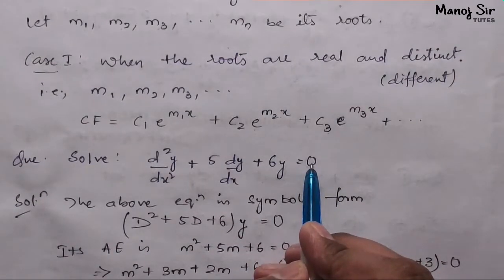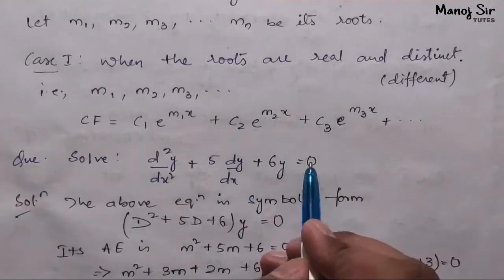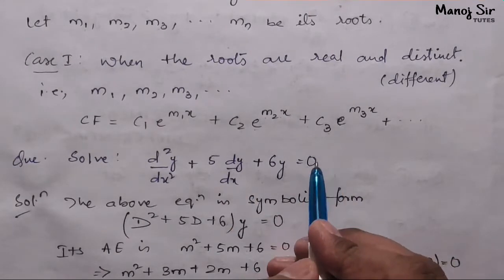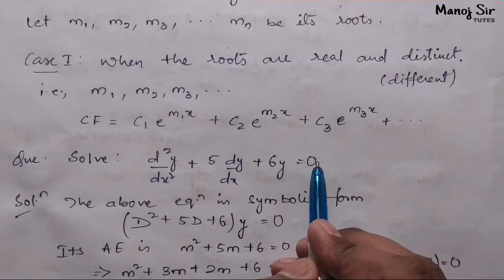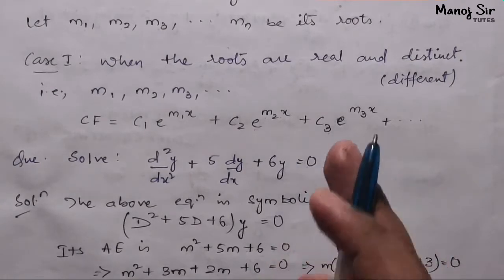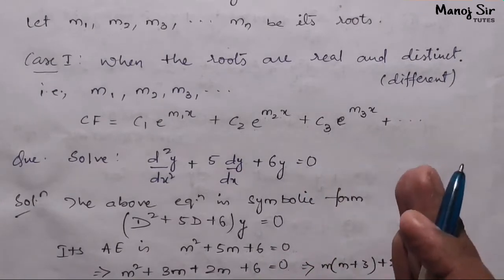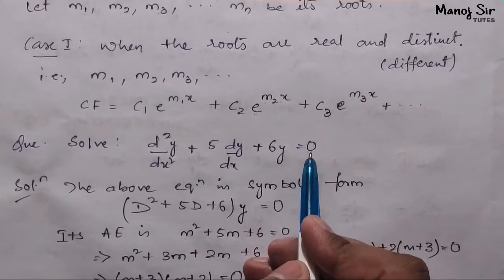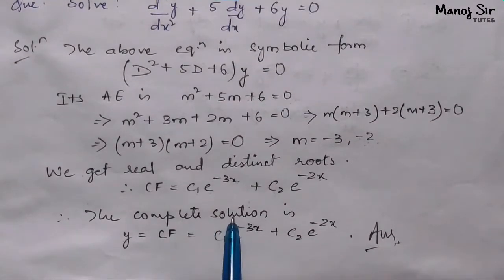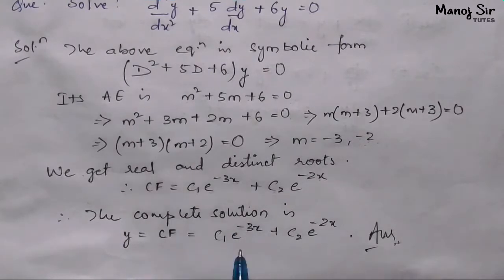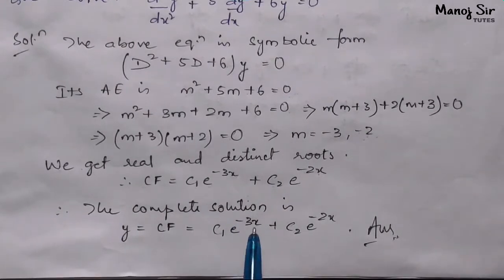Had the right-hand side been e^x, sin x, cos x, or any function of x, we would need to find both CF and PI. But since nothing is given here, the complete solution is simply y = CF, that is y = c₁·e^(−3x) + c₂·e^(−2x).